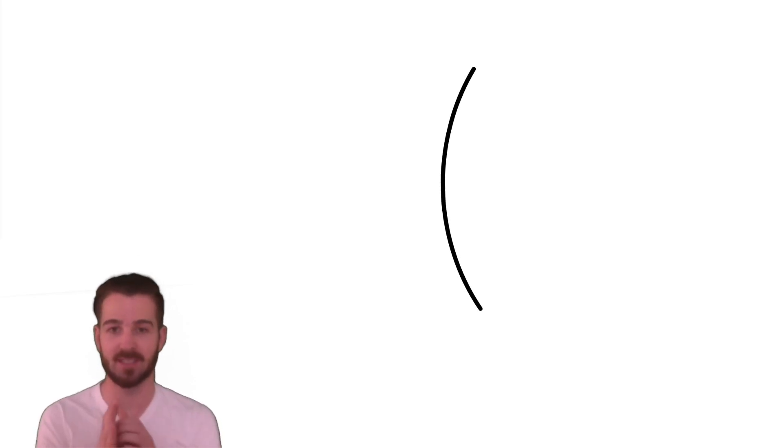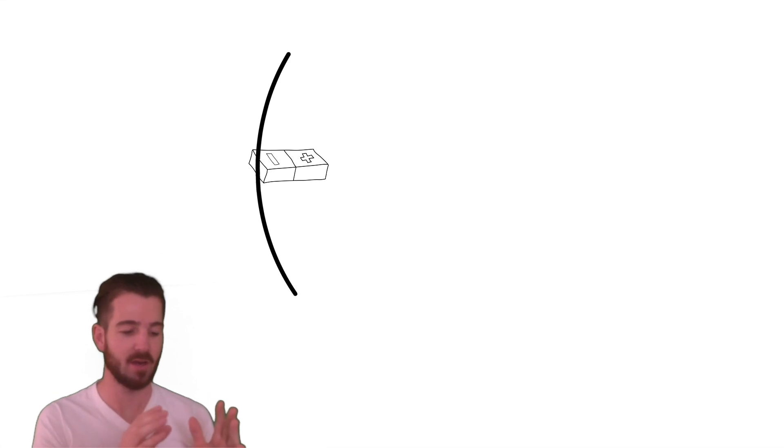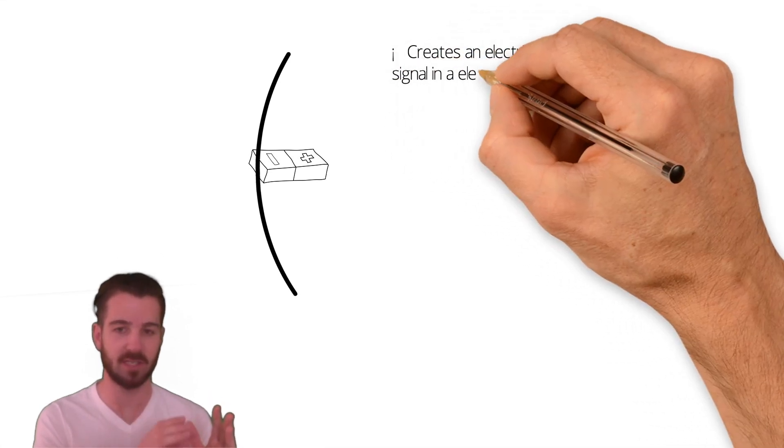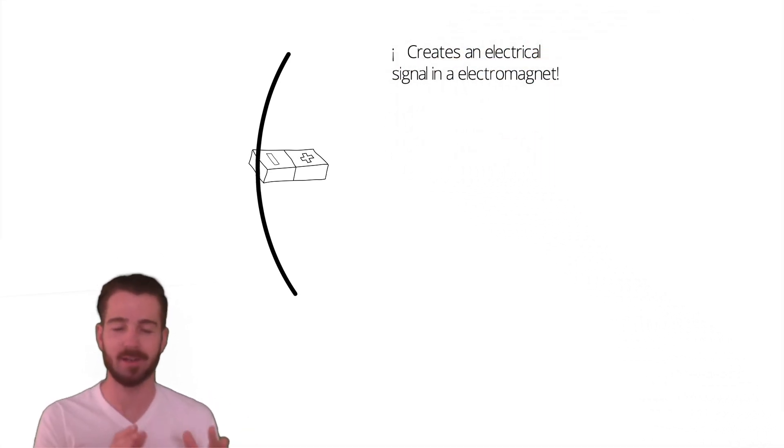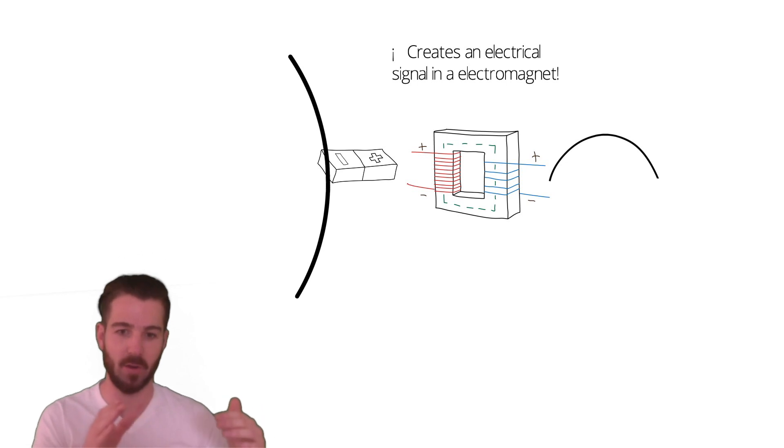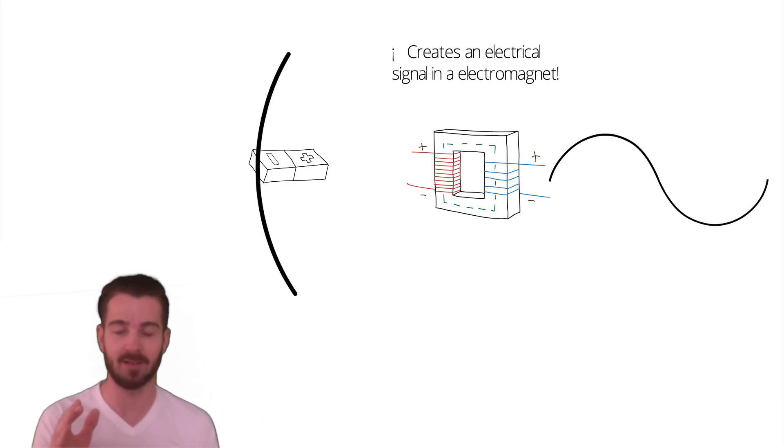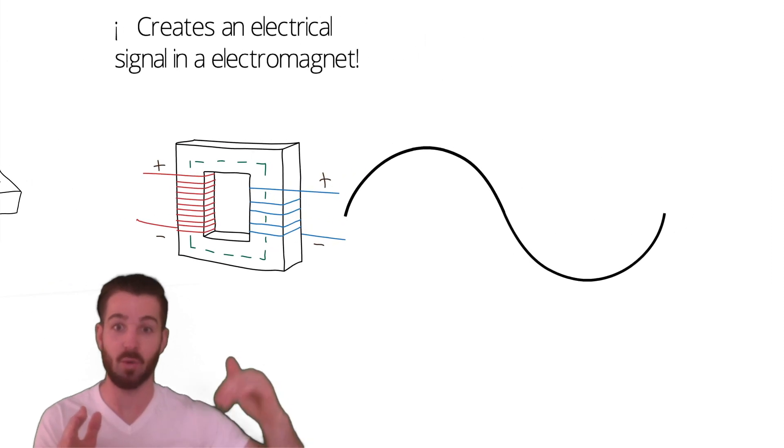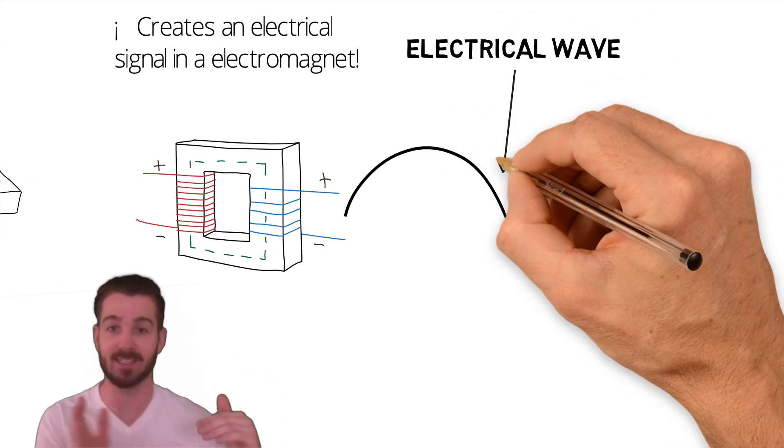And on the back of this little piece of material is a magnet. This magnet, when it moves, creates an electrical signal in an electromagnet. Now what that means is that as the magnet gets closer, it pushes an electrical signal, for example, up, and as it gets further away, it pushes the electrical signal down. So you end up with an electrical wave that mimics exactly the sound wave.